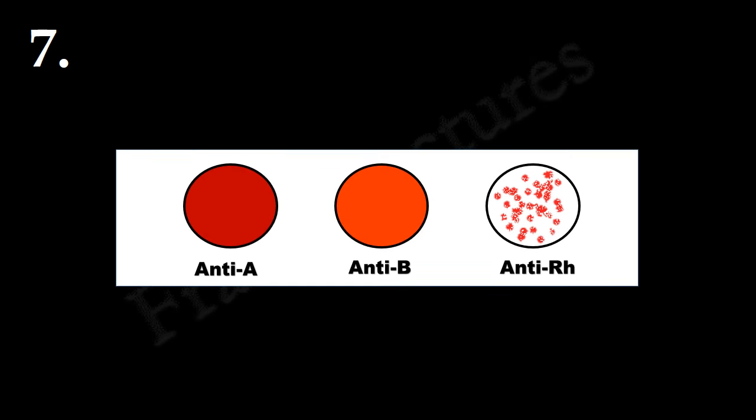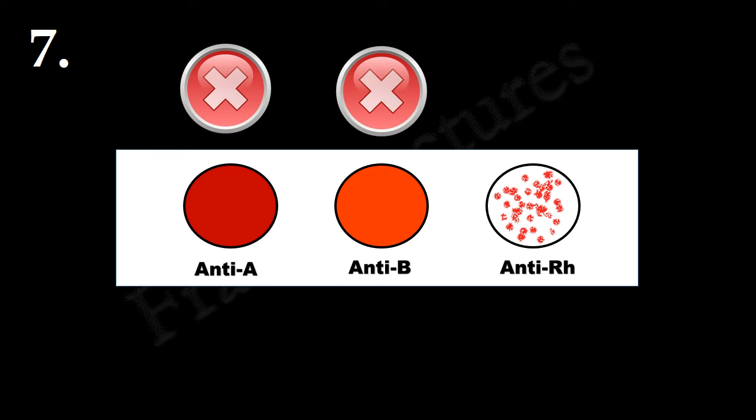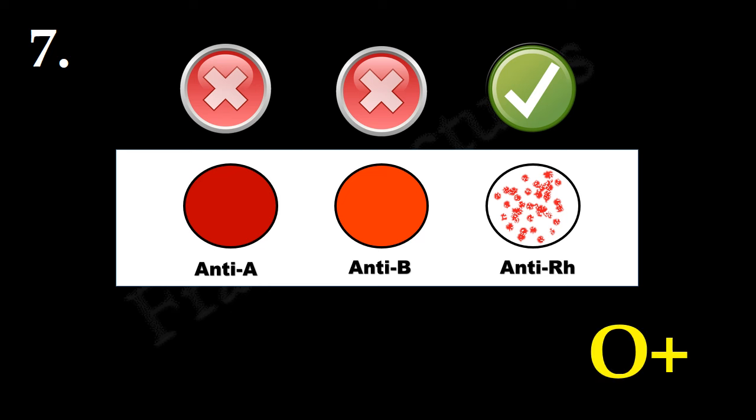Here, no agglutination is observed in the anti-A and anti-B circles. Therefore, both A and B antigens are absent. Agglutination in the anti-RH circle indicates the presence of RH antigen. Therefore, blood group is O positive.